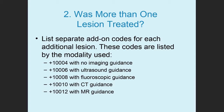For each of those primary codes, there is an add-on code. This answers the question: was more than one lesion treated during this surgical session? It always has to be the same surgical session, same day. If there are additional lesions, you use an add-on code. The add-on codes are: 10004 — no imaging guidance; 10006 — ultrasound guidance; 10008 — fluoroscopic guidance; 10010 — CT guidance; 10012 — MR guidance. The plus sign in front of them indicates they are add-on codes.